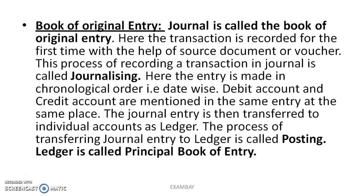After the transaction is recorded in the journal, we come to the ledger. Ledger is called the principal book of entry. The process of transferring a journal entry to the ledger is called posting. You should remember these two terms: journalizing and posting. Journal is called the original or first book of entry; ledger is called the second book of entry, or principal book of entry — this is very important and many exam questions come from this.